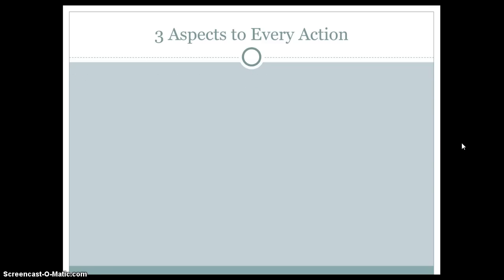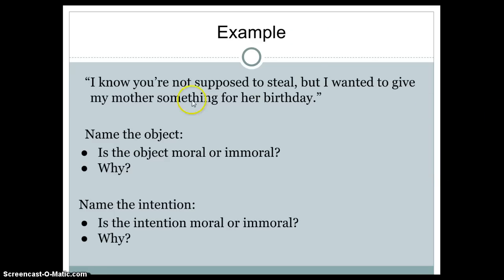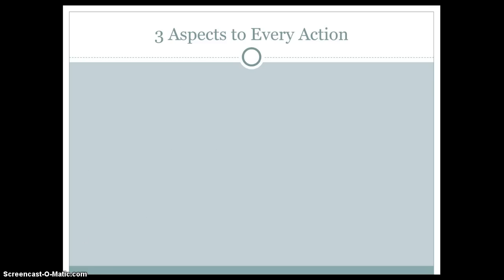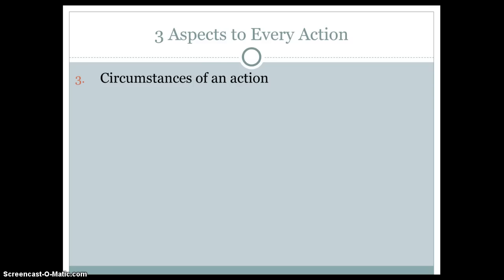If you don't understand everything we've talked about so far, you probably want to stop and go back and review. Once we have the object and intention settled, we can move on to a secondary component: circumstances. This component looks at responsibility — how responsible would we hold someone for their actions? You will only look at circumstances after you have established whether the act is moral or immoral.